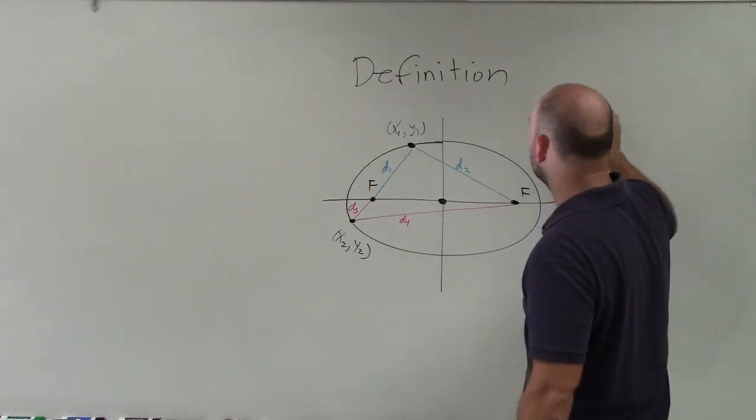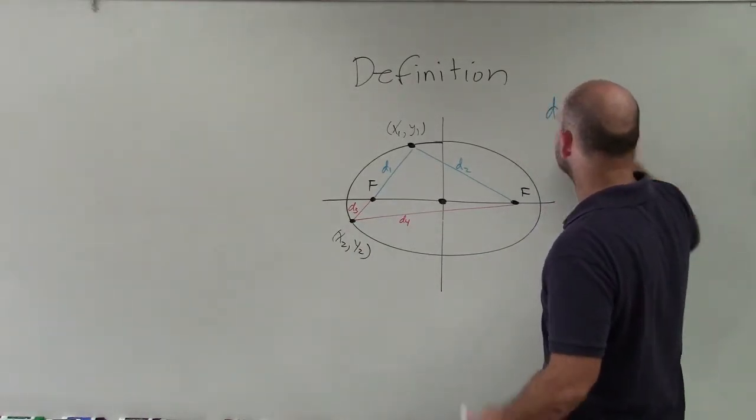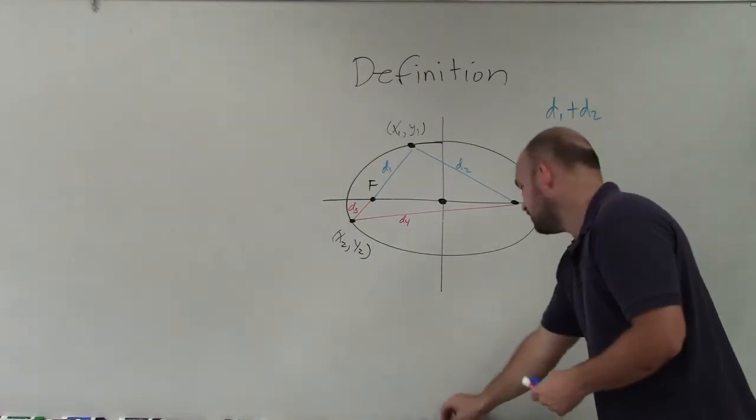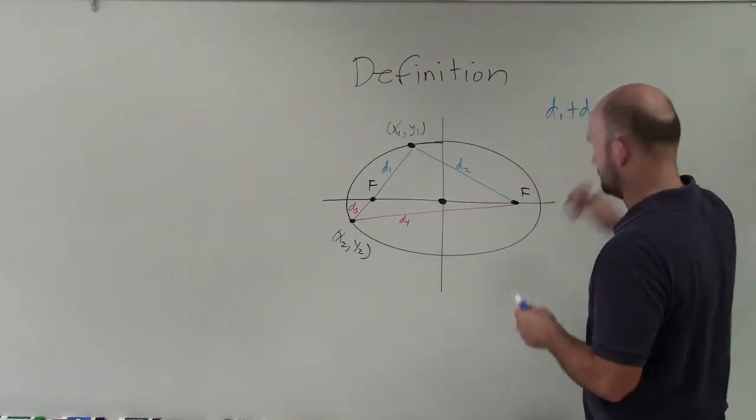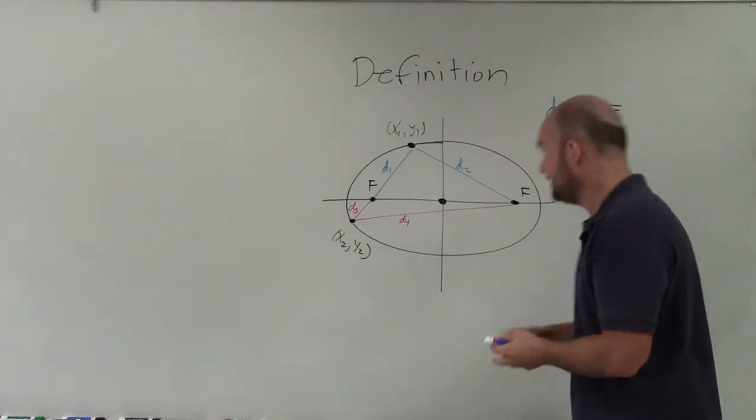So therefore, for any point, d1 plus d2 is going to be equal to d3 plus d4.